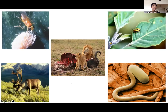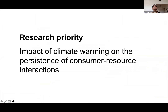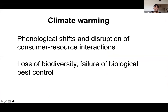Consumer-resource interactions come in all forms and shapes. We have predators and prey, plants and herbivores, hosts and parasites, hosts and pathogens. Taken together, these interactions play a fundamental role in all communities, be they natural or agricultural. This makes it imperative that we understand the impacts that climate warming has on the persistence of consumer-resource interactions. There is a great deal of evidence to show that climate warming can induce phenological shifts and disruption of species interactions, leading to loss of biodiversity and failure of biological pest control.